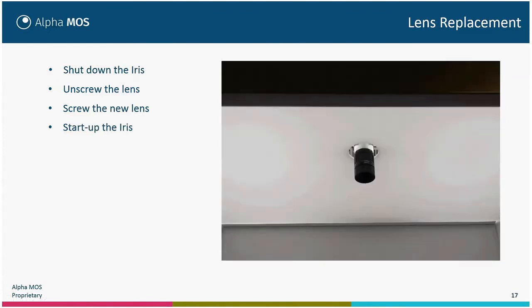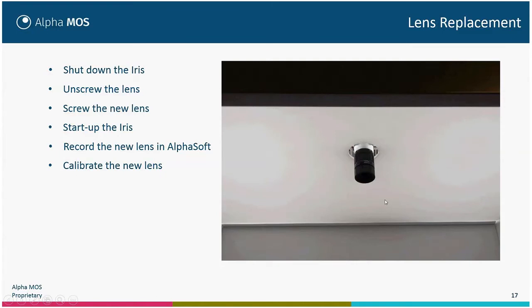Once the new lens is installed, start up the iris. You will have to record the new lens in AlphaSoft and perform a calibration for the new lens — adjusting the focus and the diaphragm — because these are not set at the beginning.